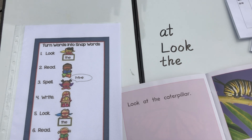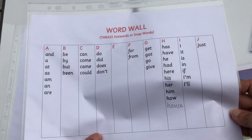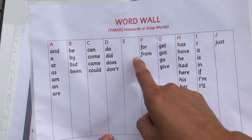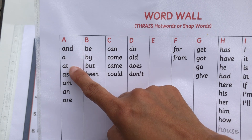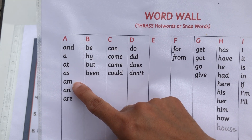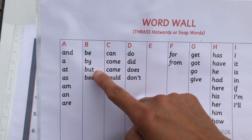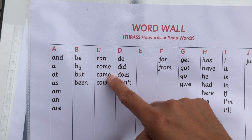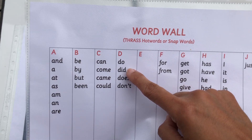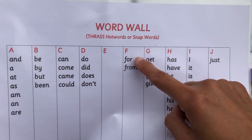Now before you go off to read, let's reread all the snap words in our word wall. I'm just going to read A to letter F. Ready? Go. And, at, as, am, an, a, be, by, but, been, can, come, came, could, do, did, does, don't, for, from.